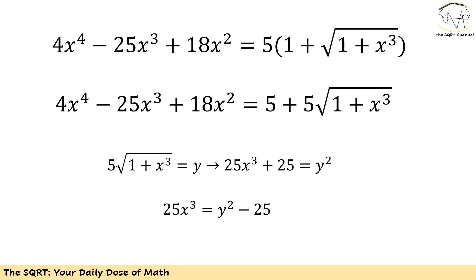It's better to replace some of these variables. I'm going to let y equal 5 times radical(1 + x cubed). The reason for this is that I have a negative 25x³ term, and when you look at the new variable defined, you can see that I can create this negative 25x³ by squaring y. If we do this we end up with y² minus 25 equals 25x³. The natural next step is to substitute this in.